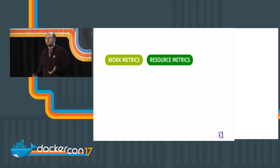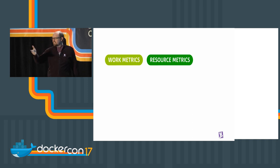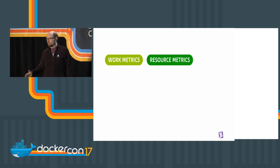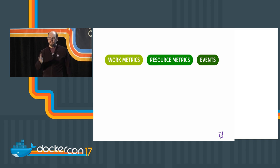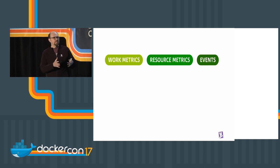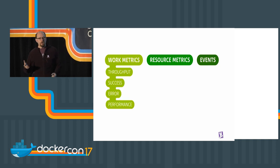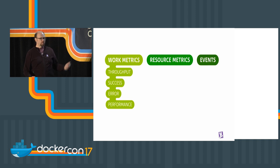The second bucket is resource metrics — interesting, they add context, but not super important on their own. The third bucket is events — also interesting but not super important on their own. They don't really tell you anything by themselves, but they add context to those work metrics. The work metrics are throughput, success, error, and performance.